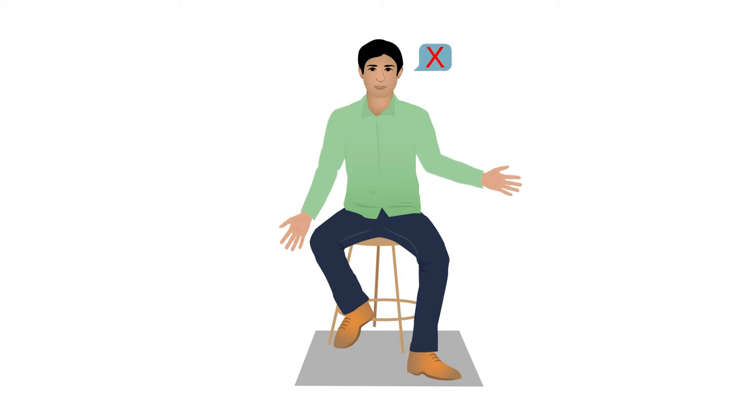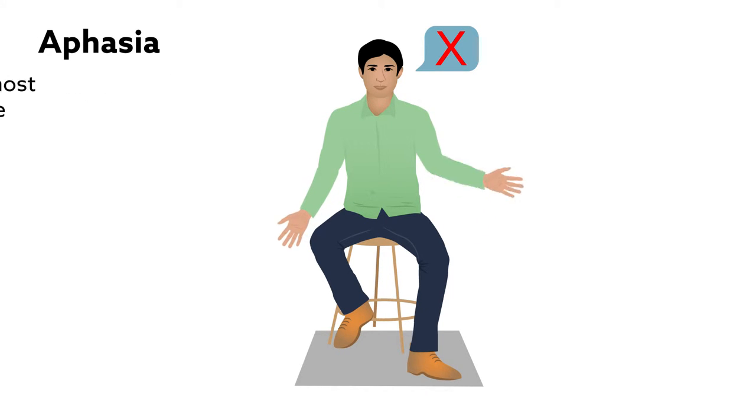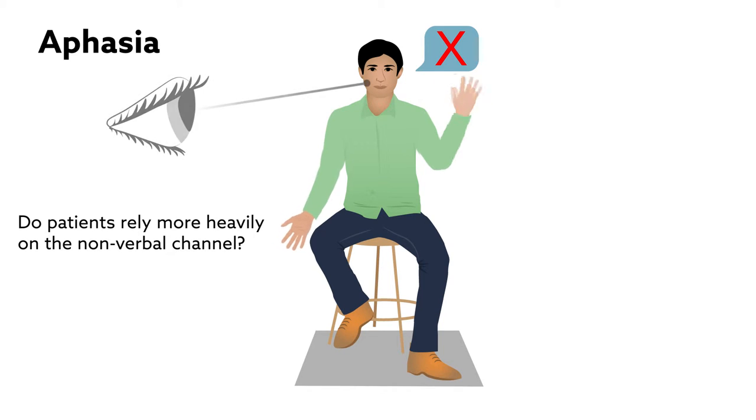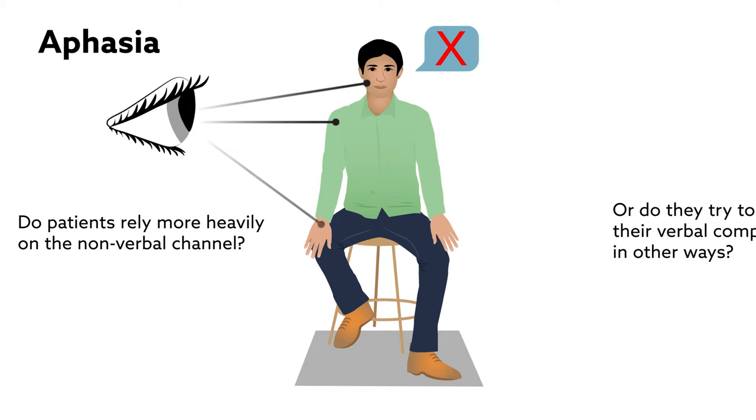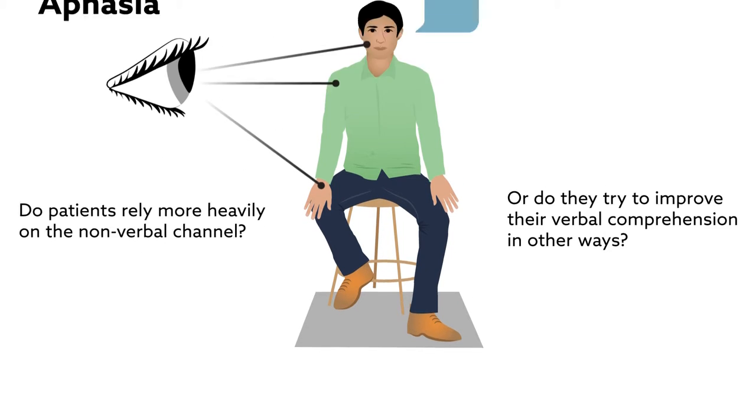One question that has long interested scientists is what happens when the verbal channel is accidentally impaired, as it is in patients with aphasia, a language disorder most often caused by stroke. Do patients rely more heavily on the non-verbal channel to compensate for the loss, or do they try to improve their verbal comprehension in other ways?